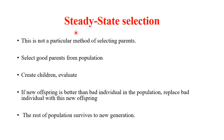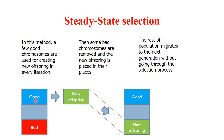Steady state selection is another parent selection method. Here, we retain the good individuals in the population and replace the bad individuals with new offspring. Good parents are selected, children are created and evaluated. If the children have a higher fitness value than the bad individuals in the population, the bad individuals are replaced with the new offspring. The rest of the population survives to the next generation.